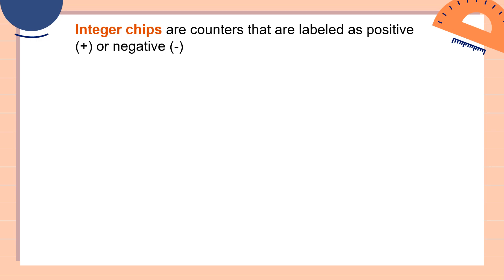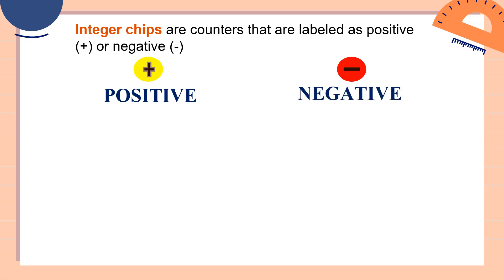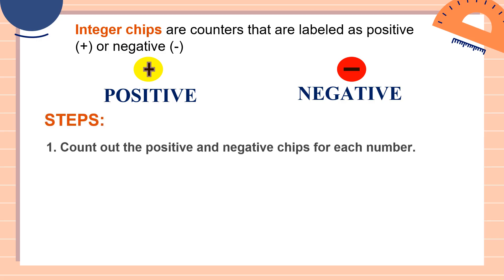Now let's talk about integer chips. Integer chips are counters that are labeled as positive or negative. This yellow counter will be our positive, and this red counter will be our negative. Now to add integers using integer chips, we have some steps that we need to follow.